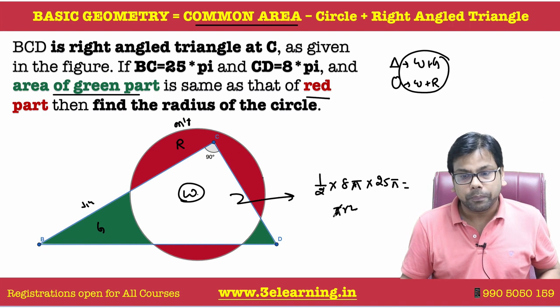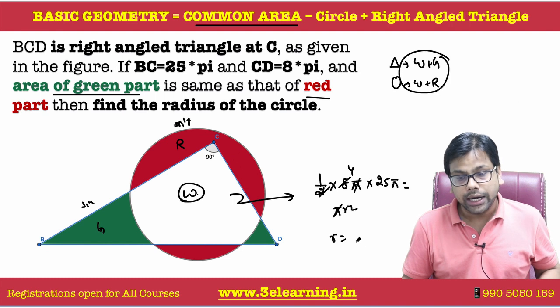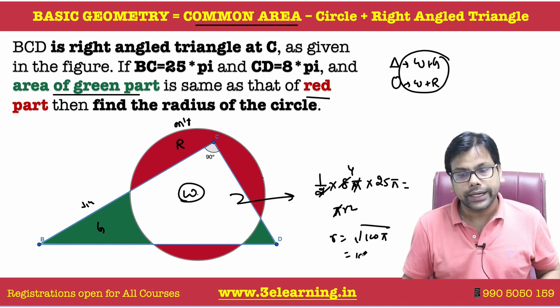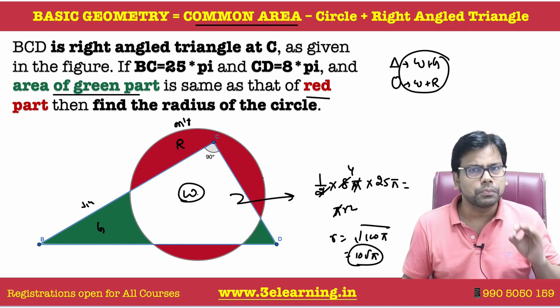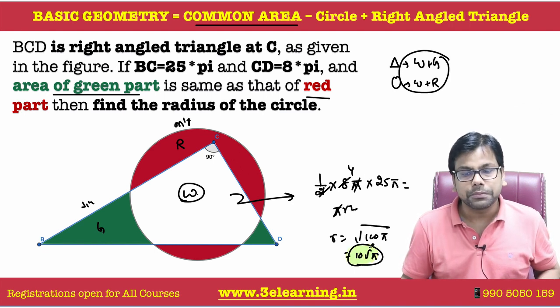So π and π cancel out. This one is nothing but 4, so the r² value gives us r equal to the square root of 100π, which is 10 root π. That is the answer of this question. It's a very basic question and you will get such questions in the exam.